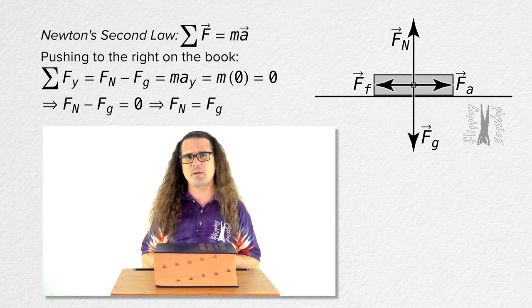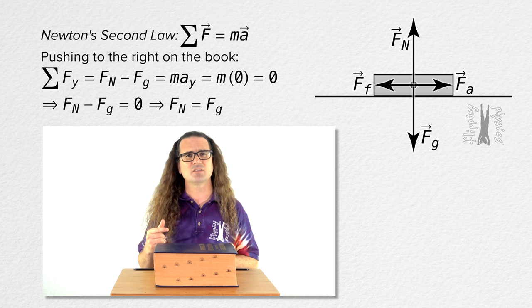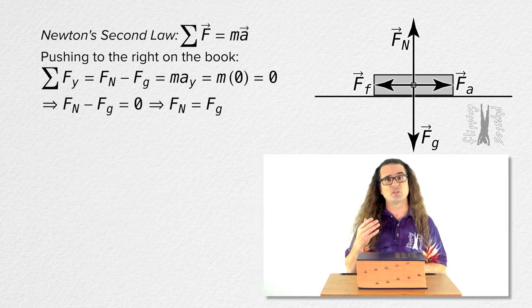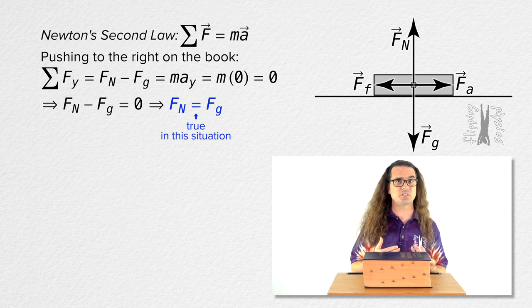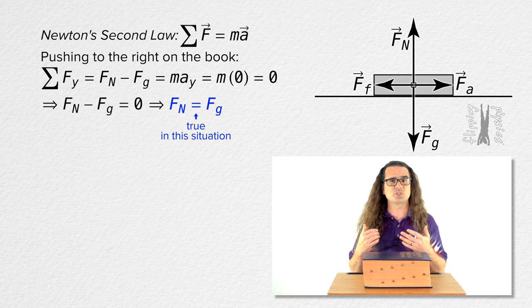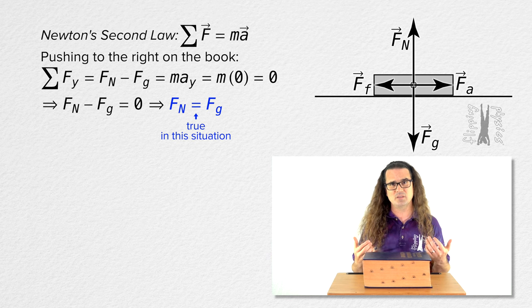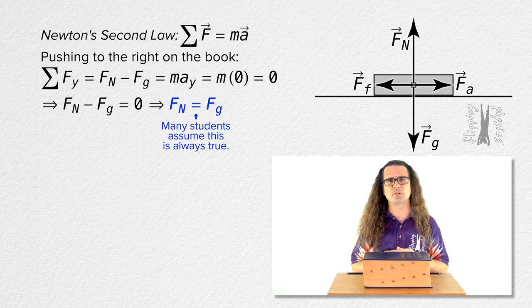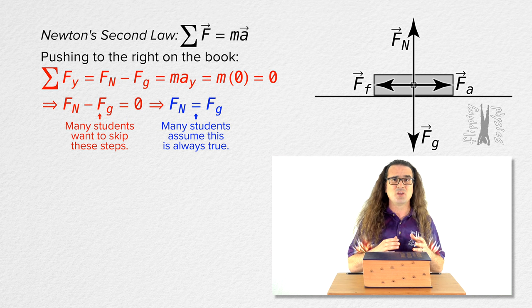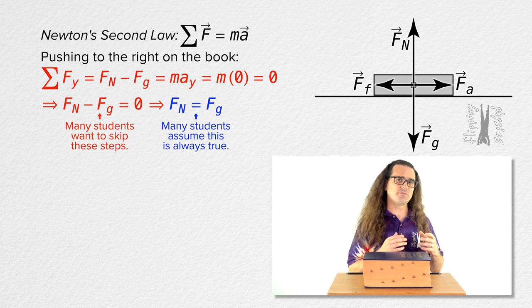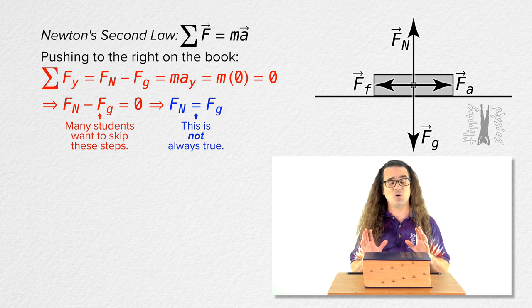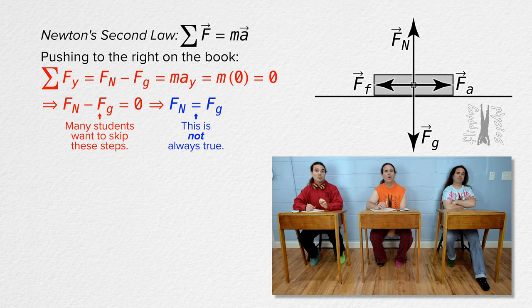We could go further in this problem. However, this is where I want to stop for today because we just showed that in this situation, the force normal and force of gravity are equal in magnitude. And because the same steps will be repeated many times in many of the problems you will solve, which include free body diagrams, many of you want to assume that the force normal and force of gravity are always equal in magnitude and you want to skip down writing the entire solution which precedes that equation. However, please realize that force normal and force of gravity are not always equal in magnitude.